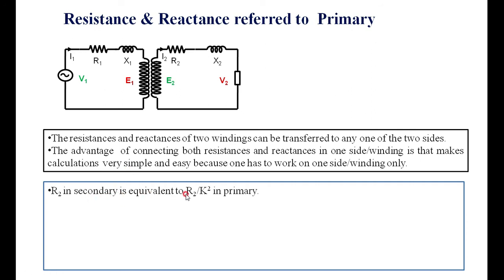R2 in the secondary, if we are transferring to the primary side, its equivalent resistance changes from R2 to R2 divided by K squared. Similarly, if X2 is the reactance in the secondary, it can be transferred to the primary side. In that case, X2 in the secondary is equivalent to X2 divided by K squared on the primary side.